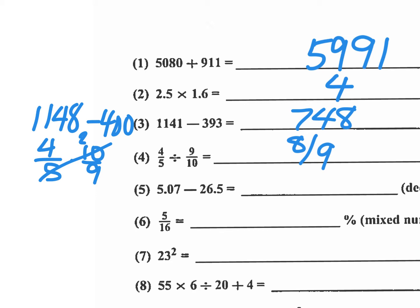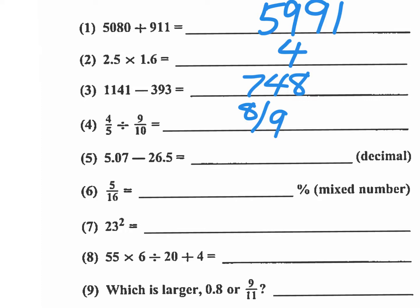Number five, they want the answer as a decimal. So what I'm going to do is take 5.07 minus 26.5. You notice the answer is going to be negative. So write the negative first so I don't forget. And then I'm going to do 5 minus 26. That would be a negative 21. And then you're going to have 0.43. So your answer there is negative 21.43.